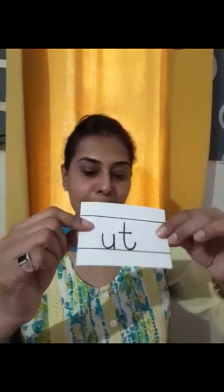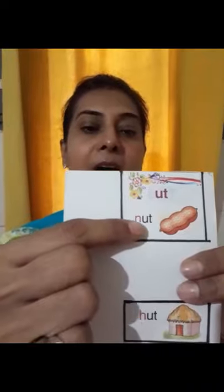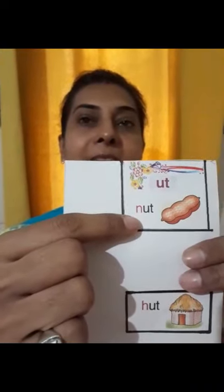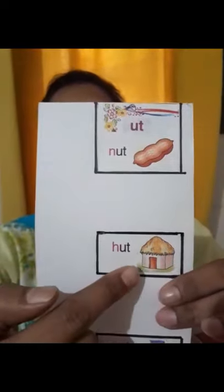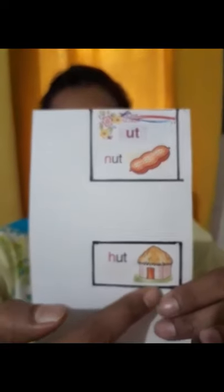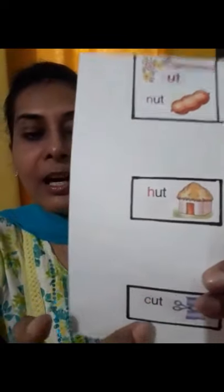So children, we saw how three-letter words are made with the help of two letters. This will help you to read three-letter words. Now let us revise our words: Nut. Hut. Cut.